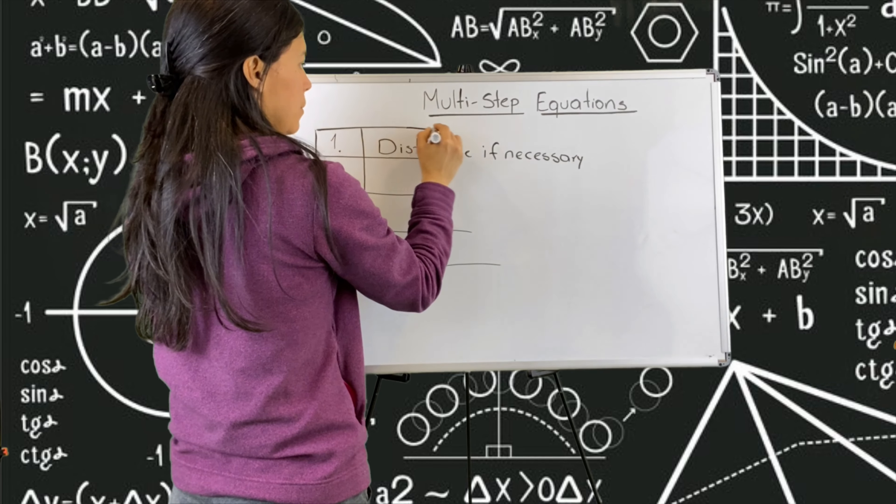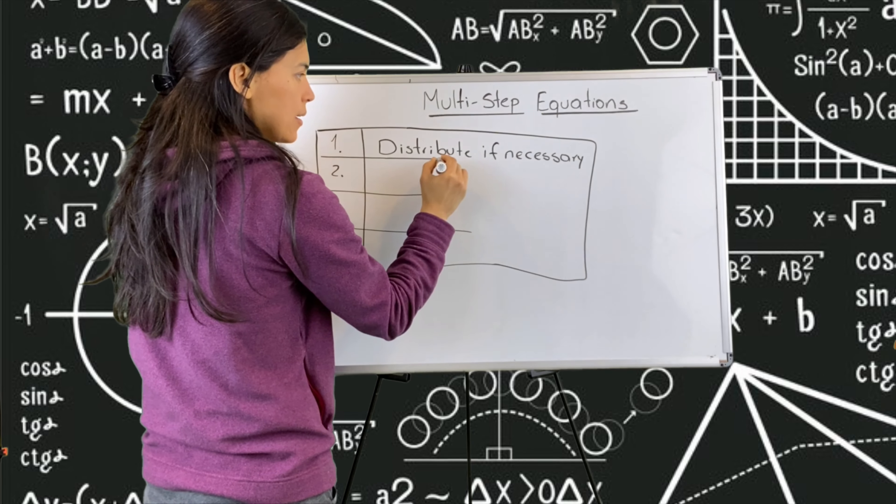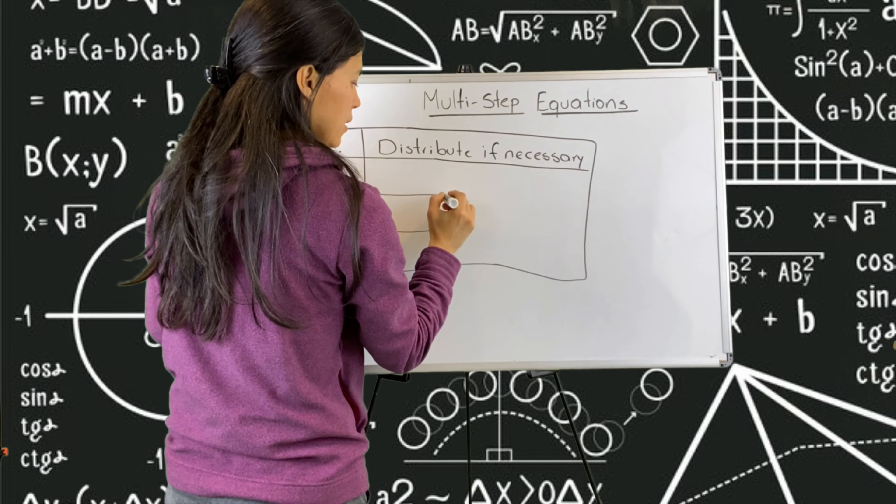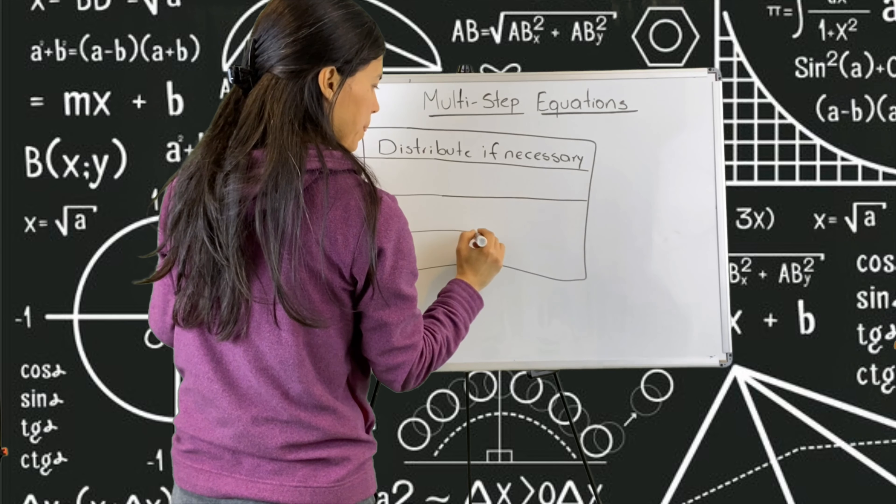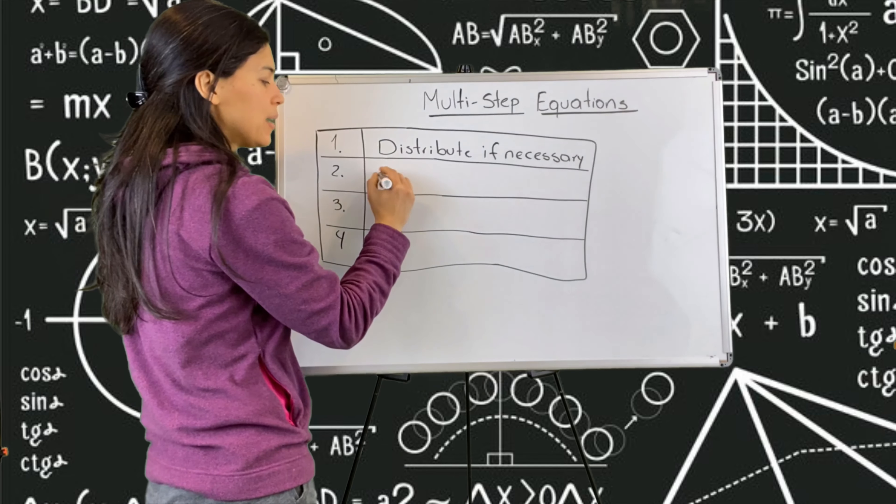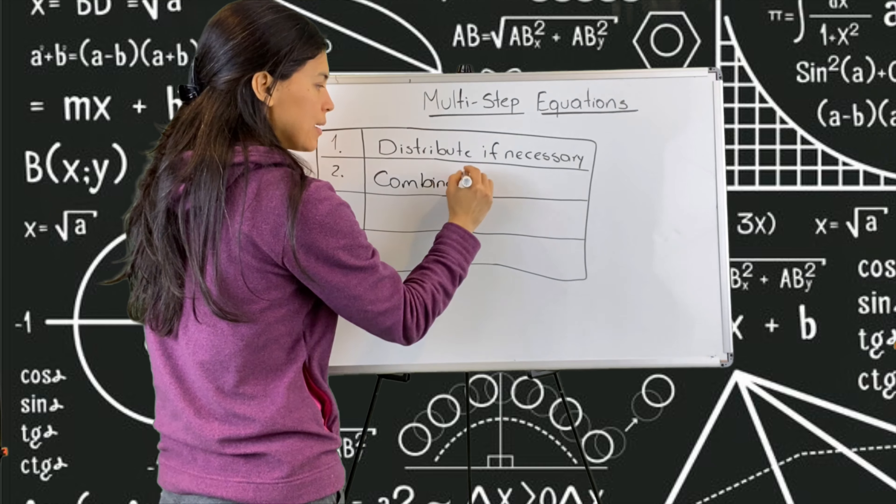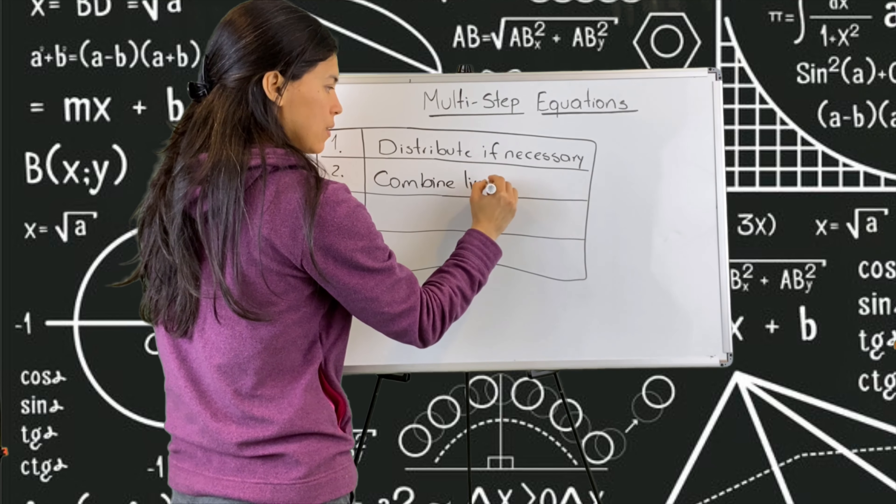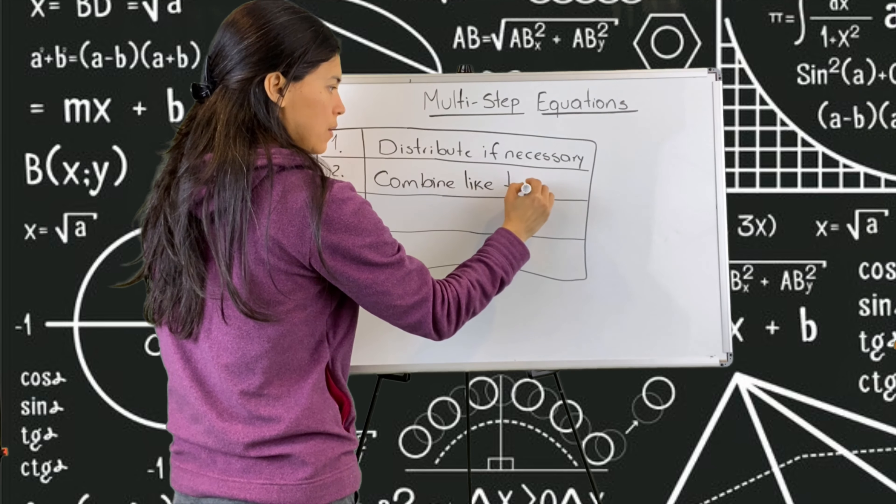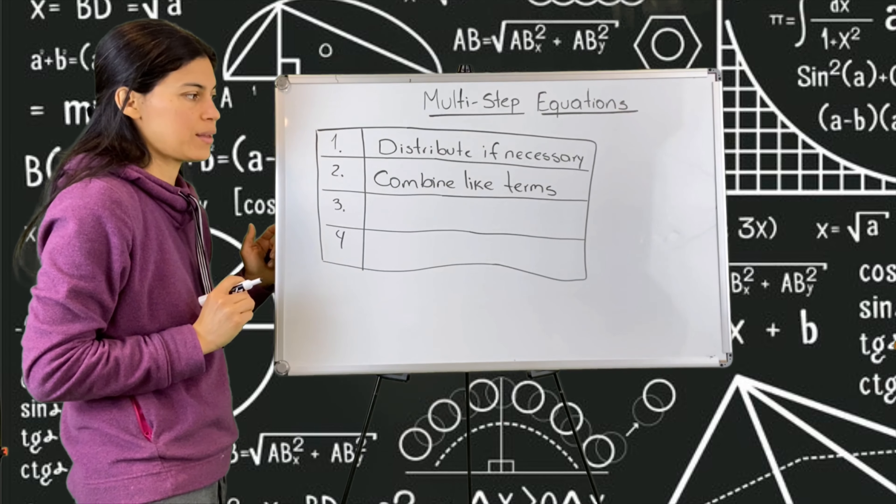Let me write over here. This is what it looks like in your worksheet. Second step is combine like terms. We put the x's together and the numbers together, right?